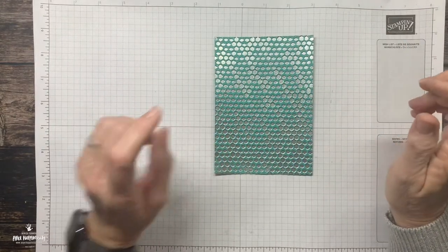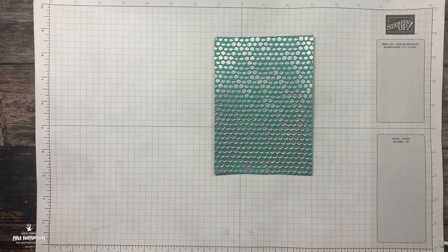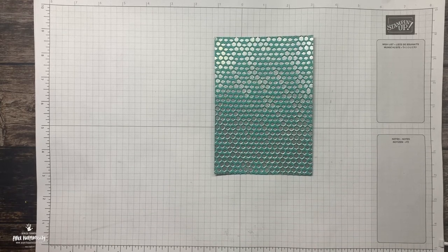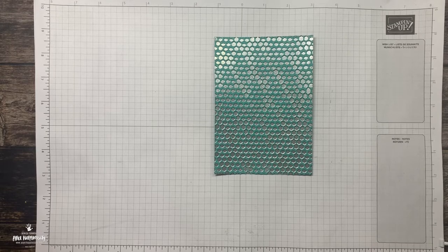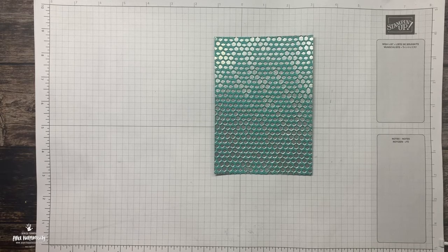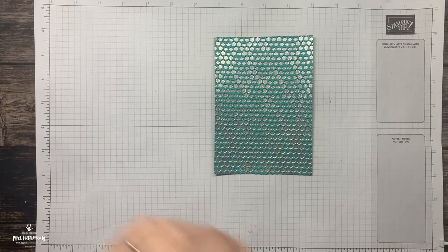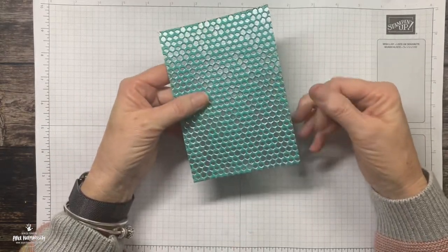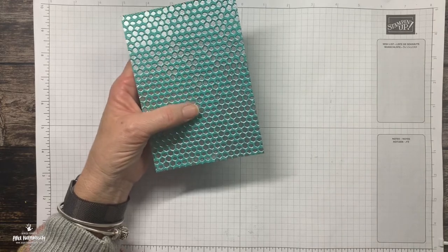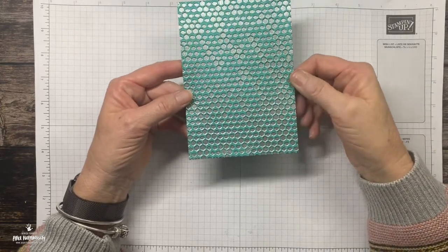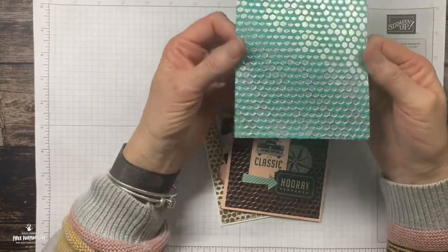One thing I do want to mention that I'm really excited about is that Stampin' Up will be bringing out a new embossing toolkit in our next catalog. That comes with an embossing buddy, tweezers, a brush, and a tray. That's the big thing - a tray to work in. It's got a little opening on the end that you can just funnel the embossing powder back into your containers. So there you have it - silver on Bermuda Bay cardstock.